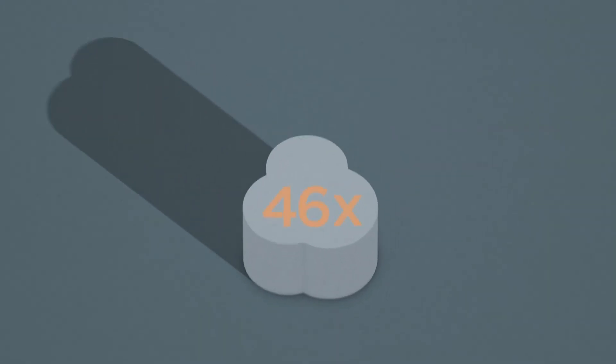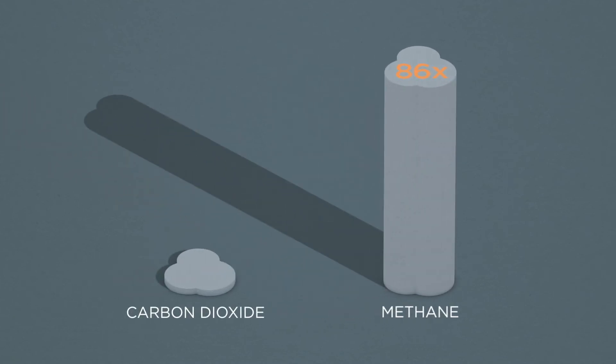Methane is a super pollutant. It's 86 times more disruptive to our climate than the carbon dioxide from coal burning power plants.